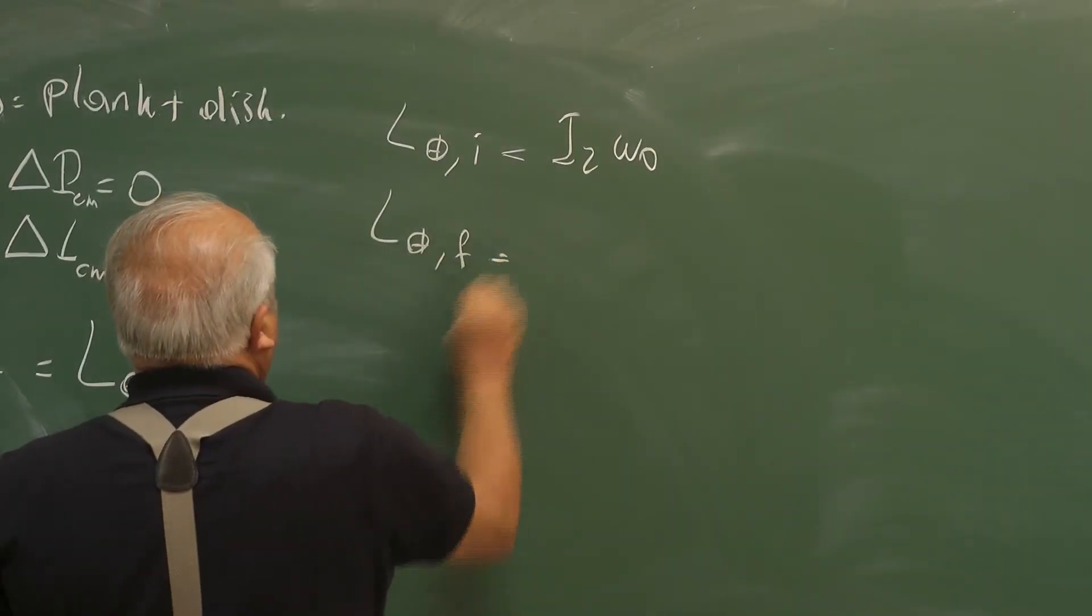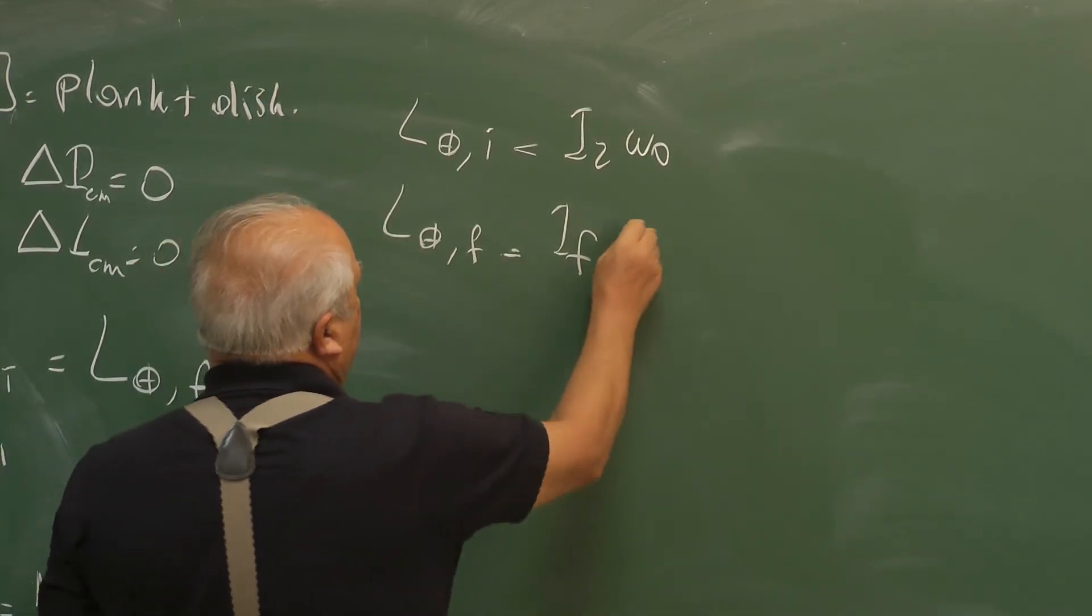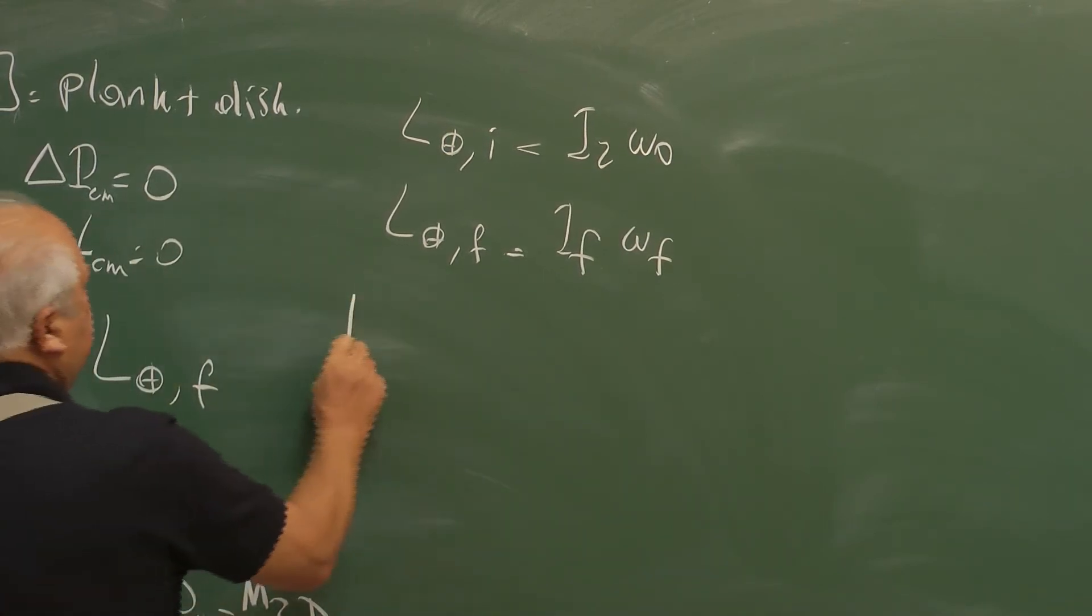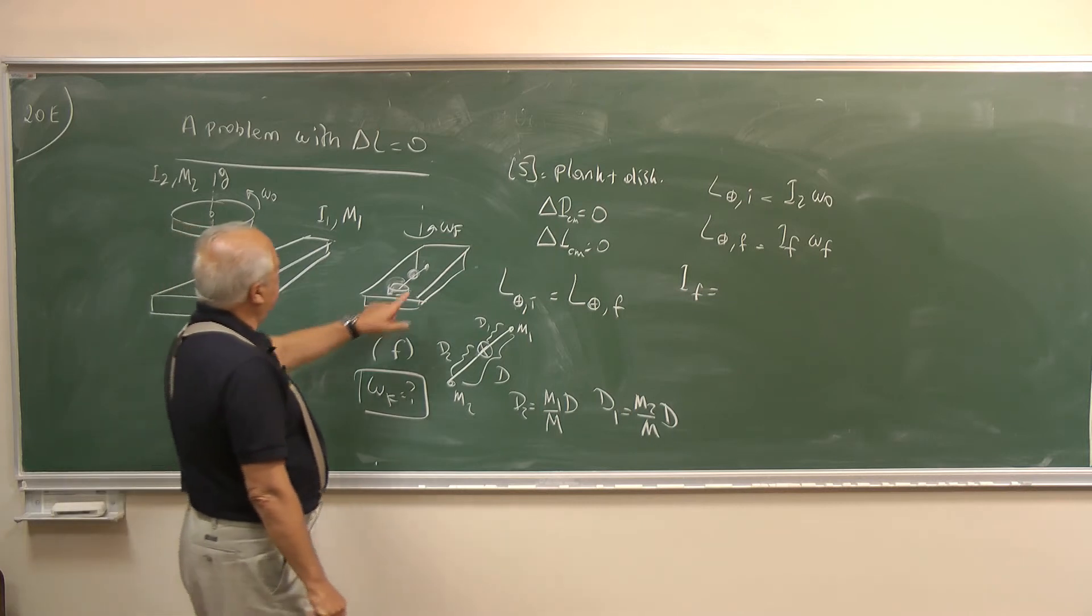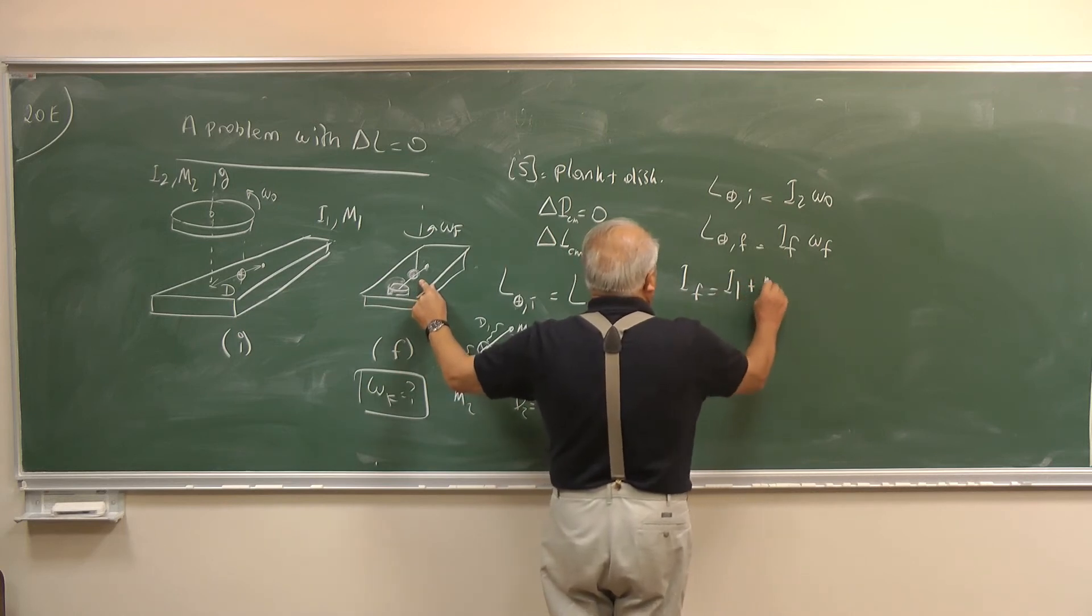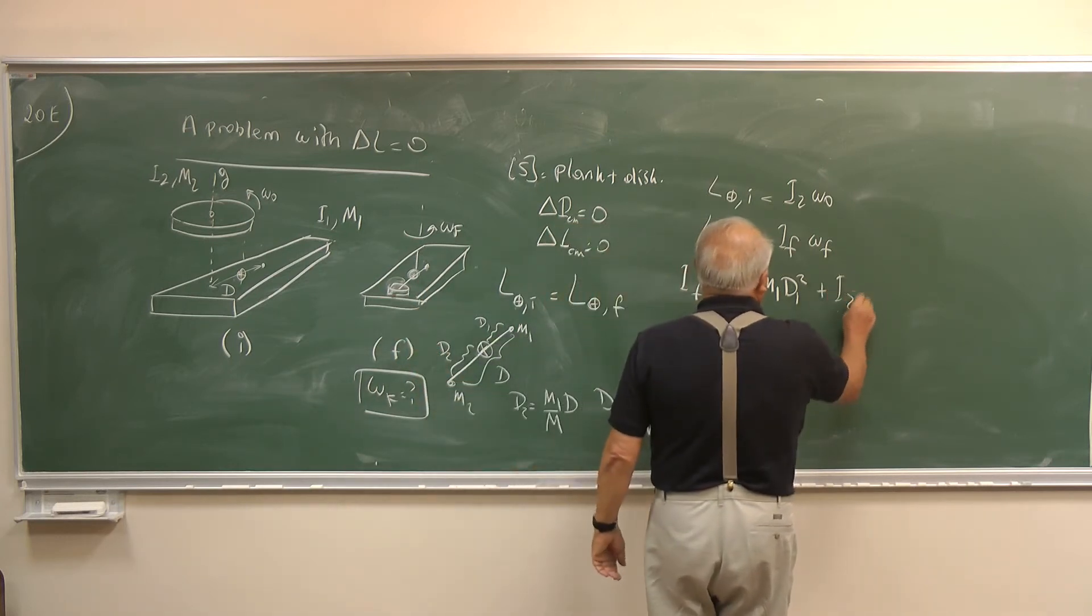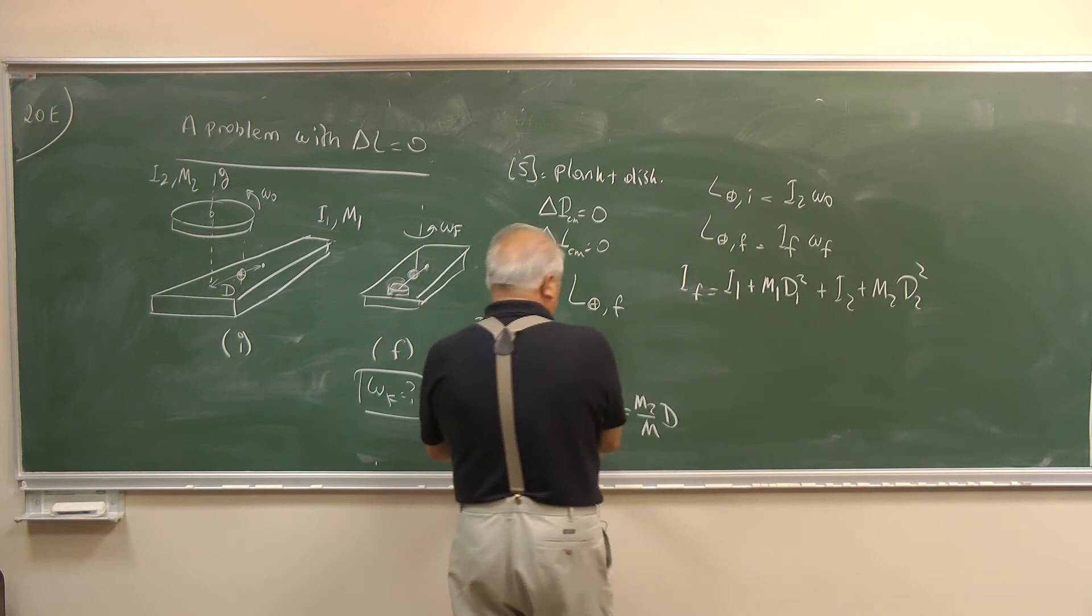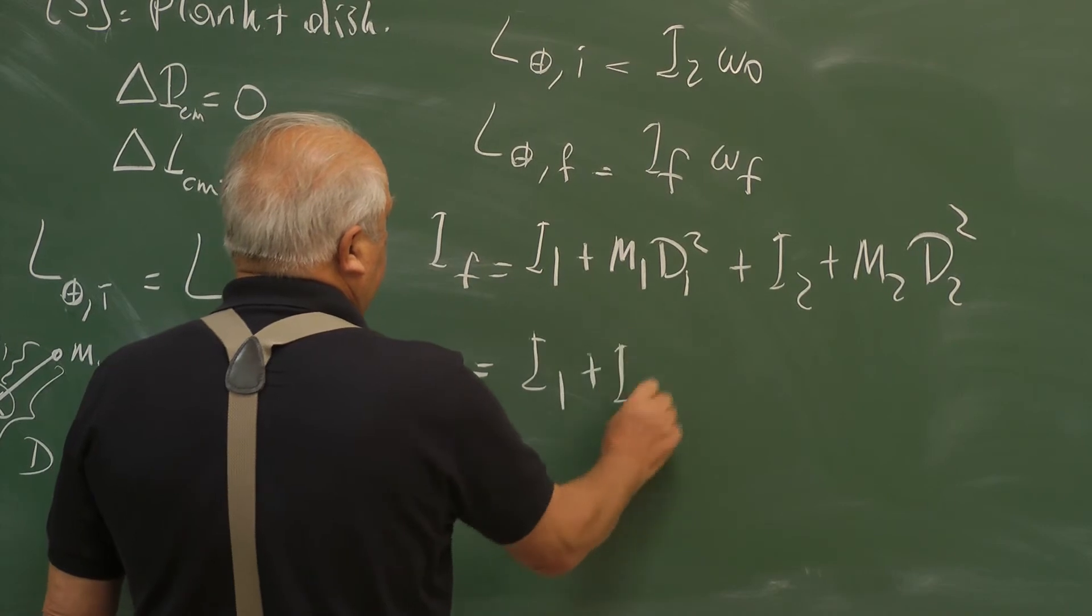L central mass final is equal to I final, final moment of inertia times omega f. So we have to write the final moment of inertia. Now we shall use the parallel axis theorem so this has I1 plus M1 D1 square and for this one we have I2 plus M2 D2 square.